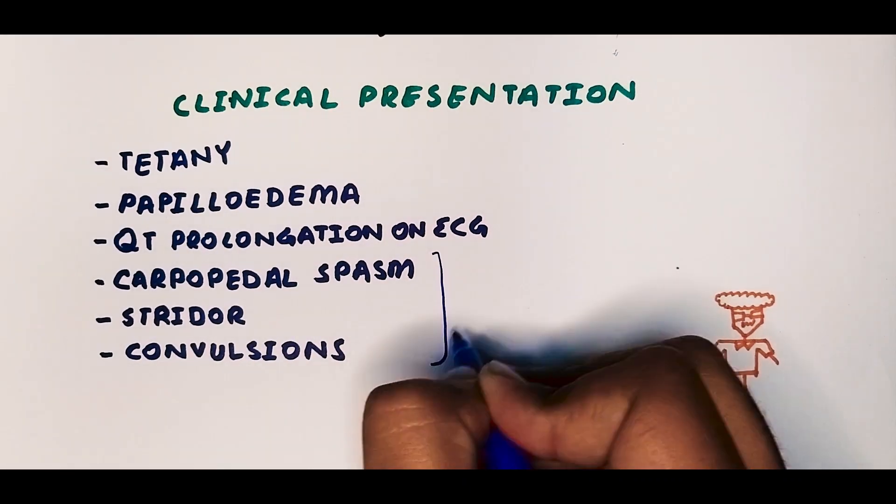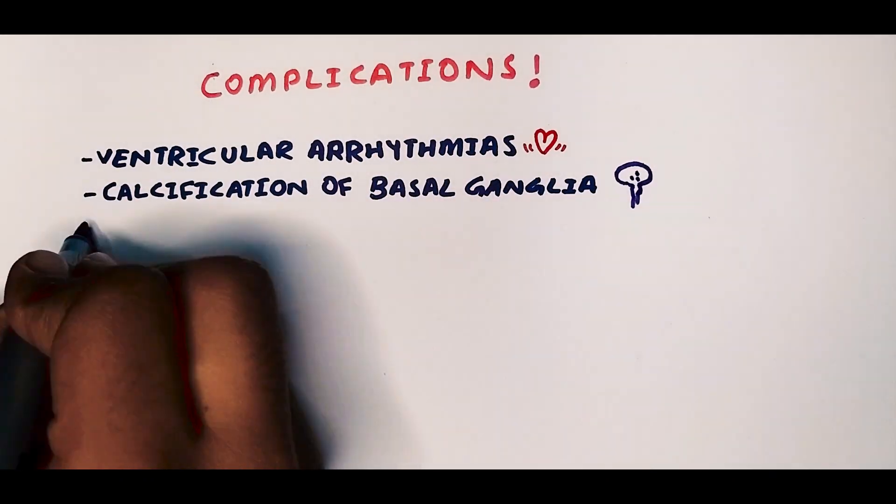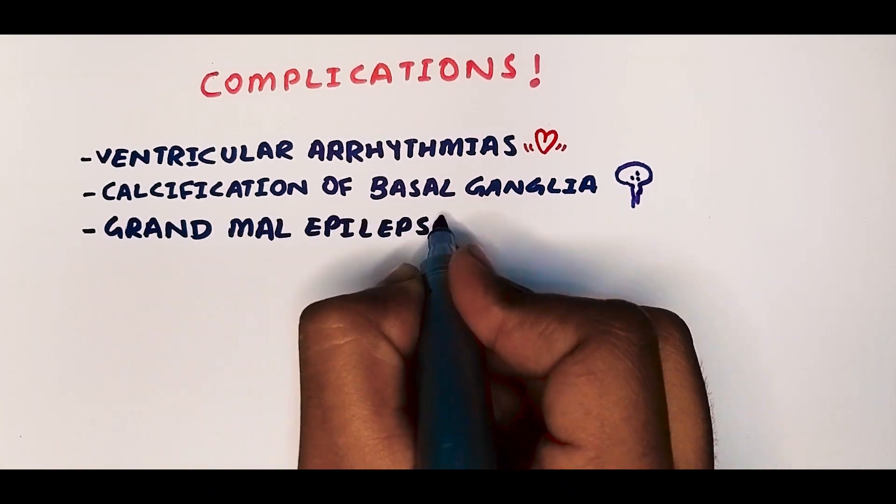And if such a patient were to go on without any treatment, it may complicate into ventricular arrhythmias, calcification of the basal ganglia of the brain. The convulsions may even convert into grand mal epilepsy.